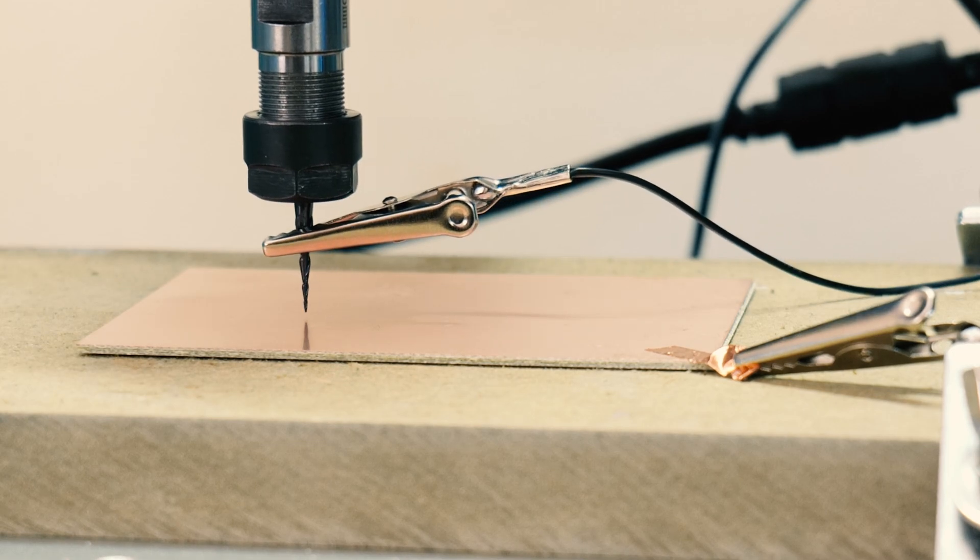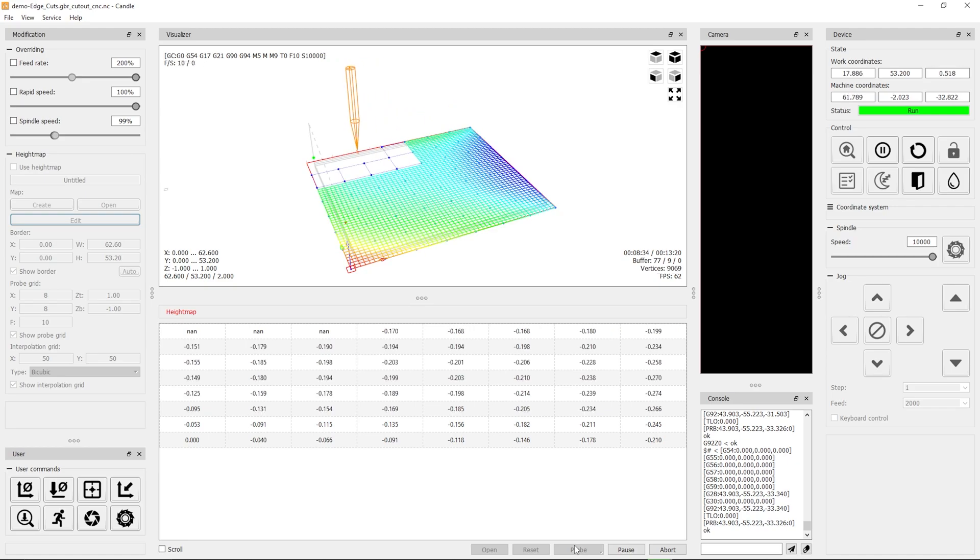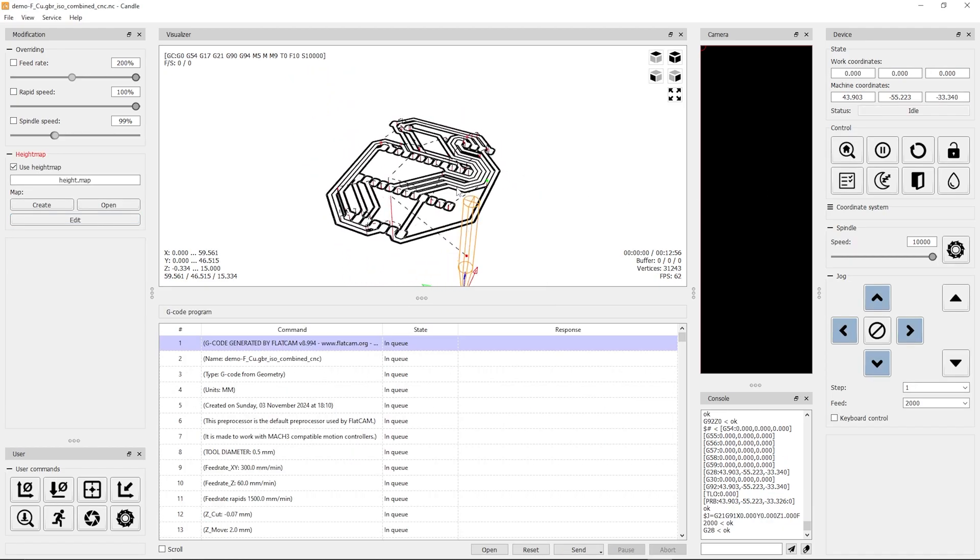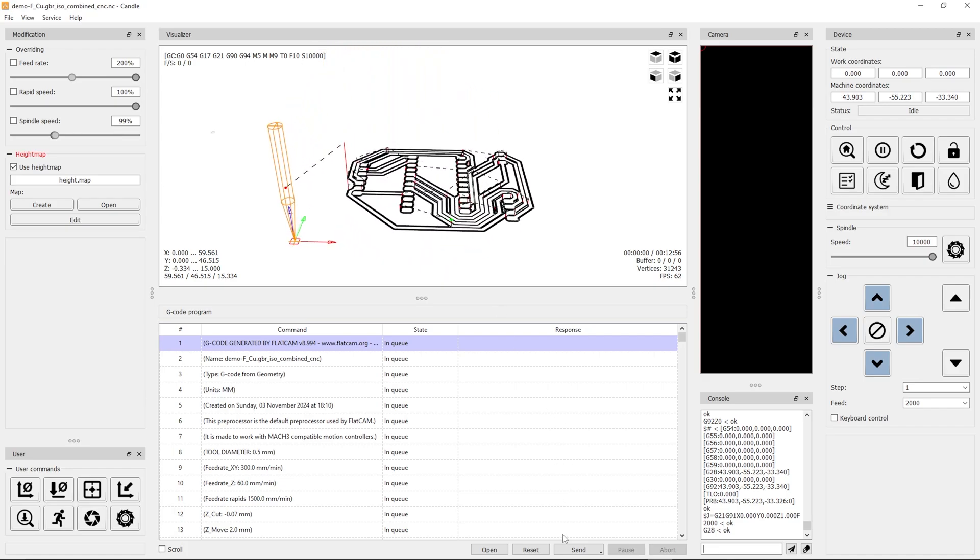By this point you've got your PCB firmly attached onto the CNC, you've generated your height map, so now we're able to load up the CNC files and send them off to the machine.